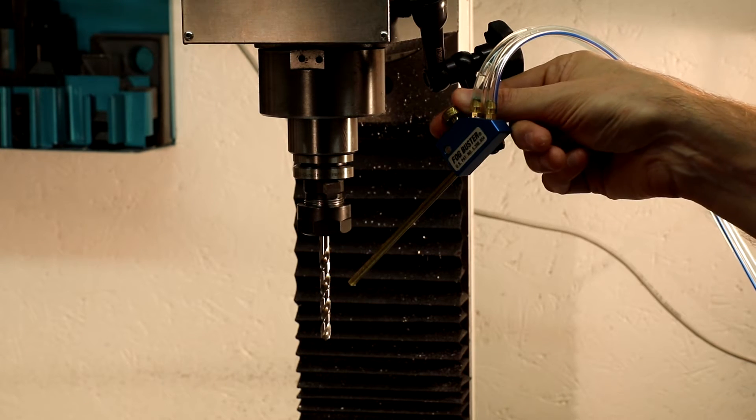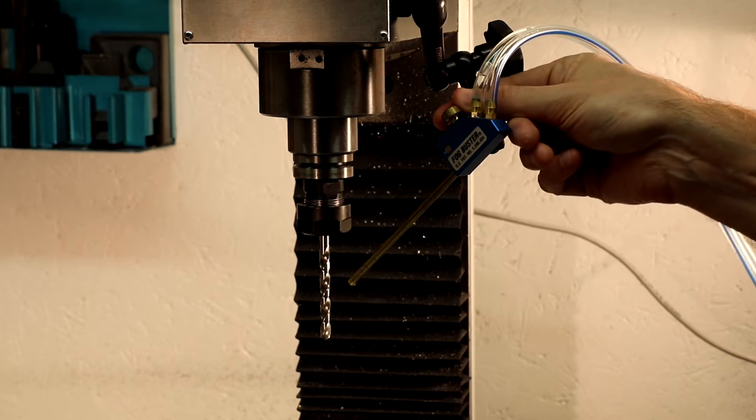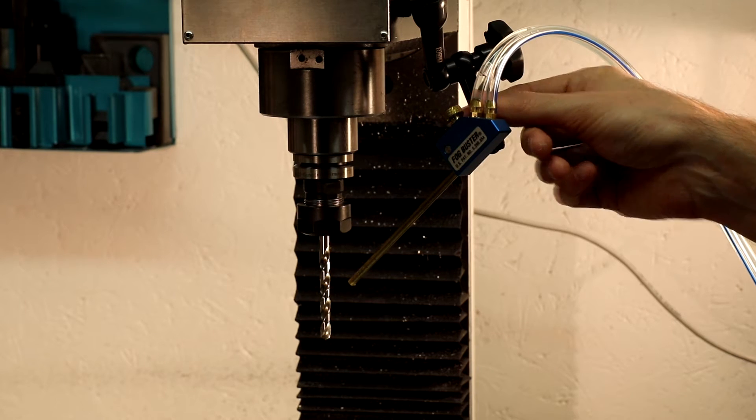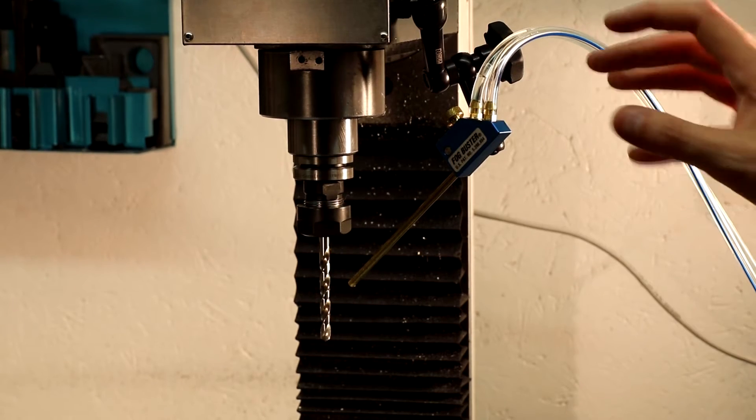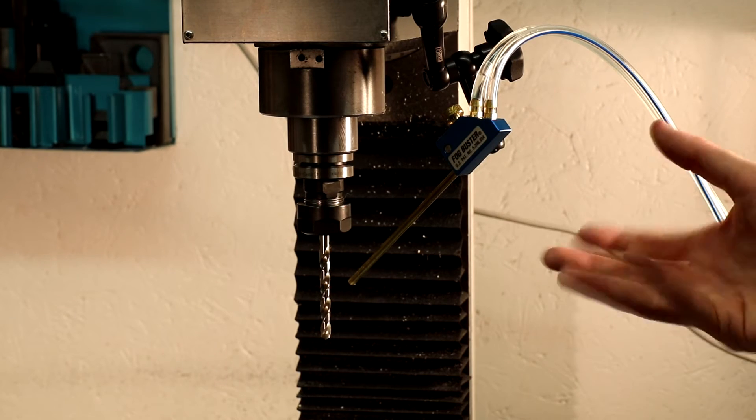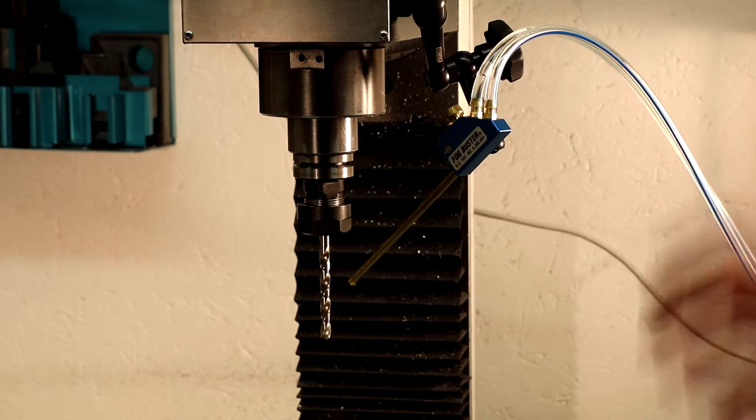To adjust the coolant flow, close off the valve completely and then just crack it open. There should be very little coolant that actually flows. I haven't had the arm move under the vibration of the mill. It seems to be very rigid.